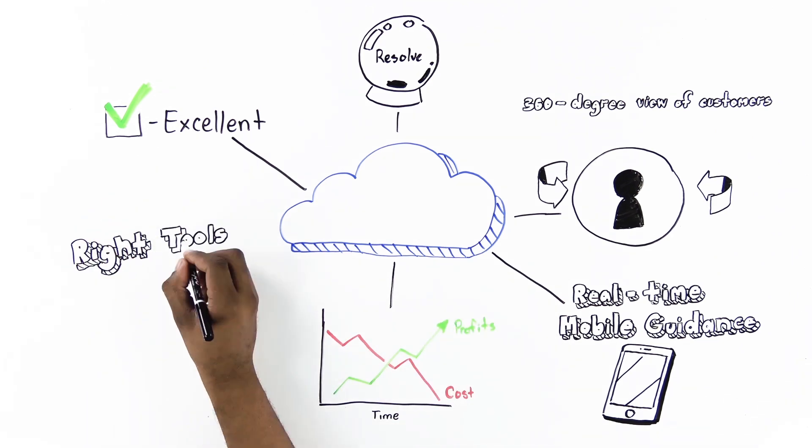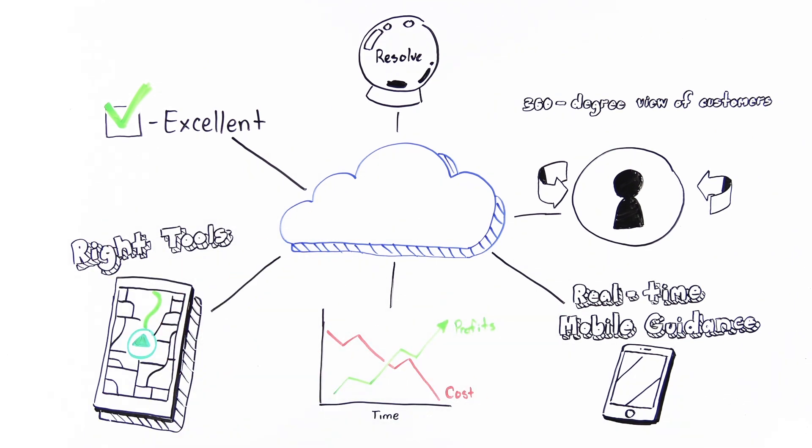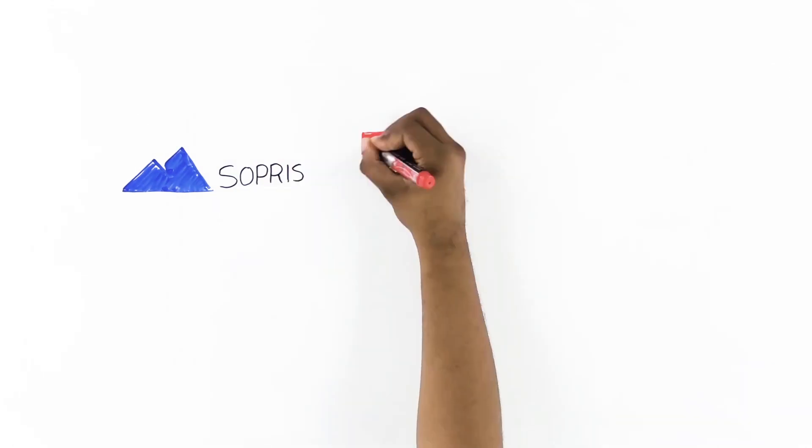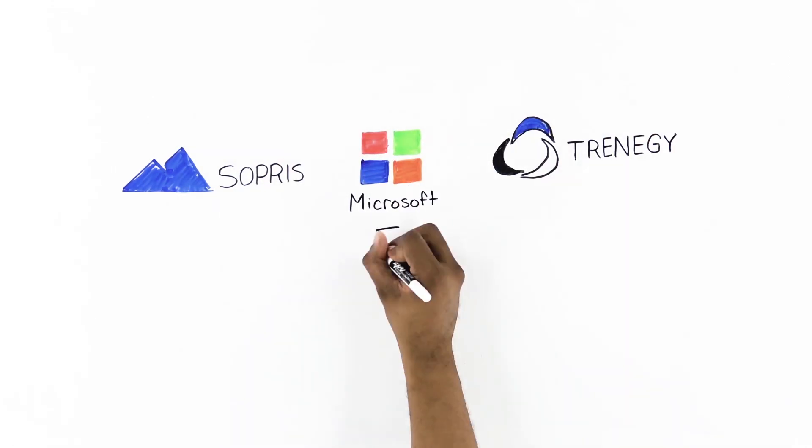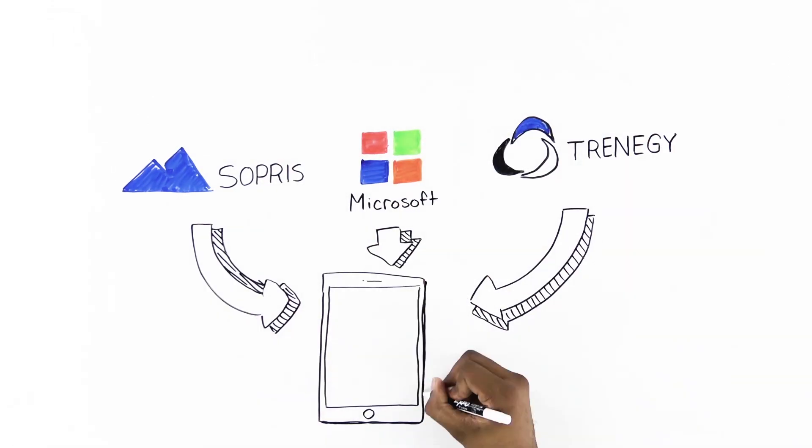It's lowering operational costs and knowing your team has the right tools to do the job. Join experts from Sopris, Microsoft, and Trinegy as they guide you through connected field services,